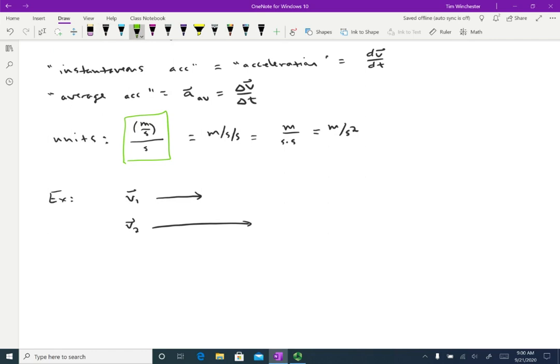So if I'm thinking of this as trying to get V1 to look like V2, then the change I need to make is a vector that looks like this. So if I add this particular delta V to my V1, then the total of those two looks like V2. And then since the acceleration is delta V over delta T, and delta T is just some number, the direction for acceleration in this case is going to be to the right.